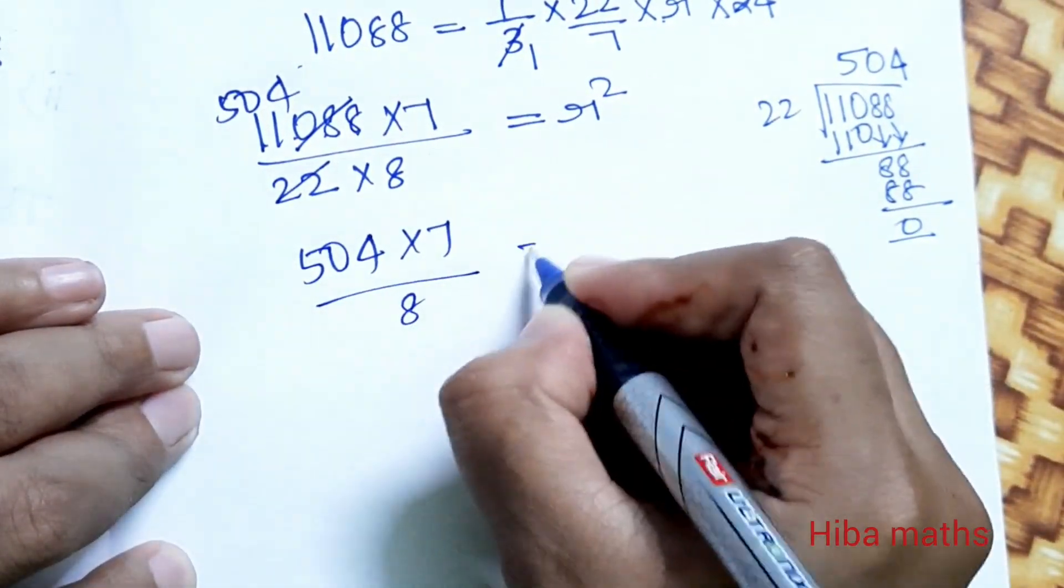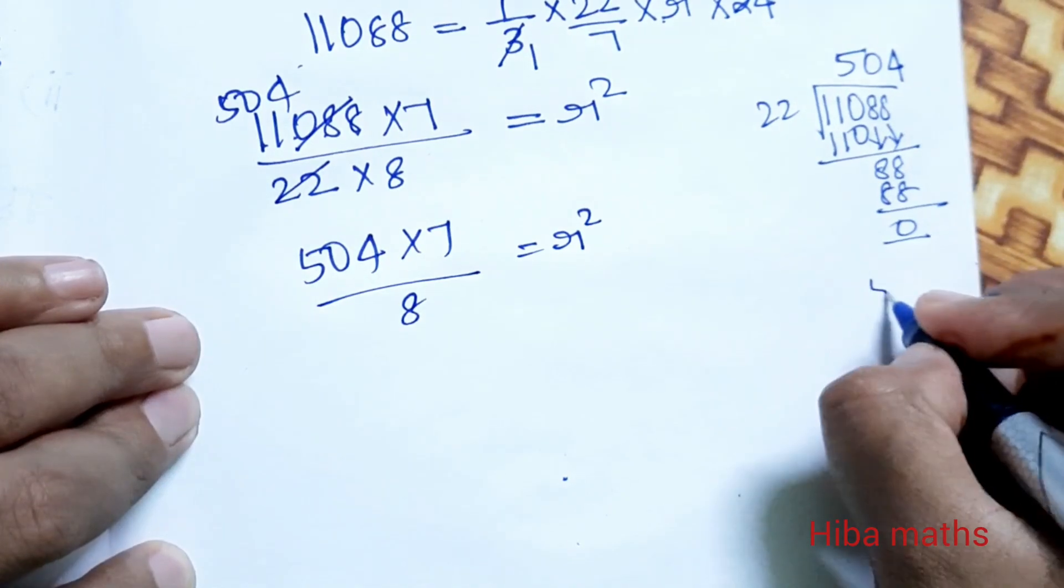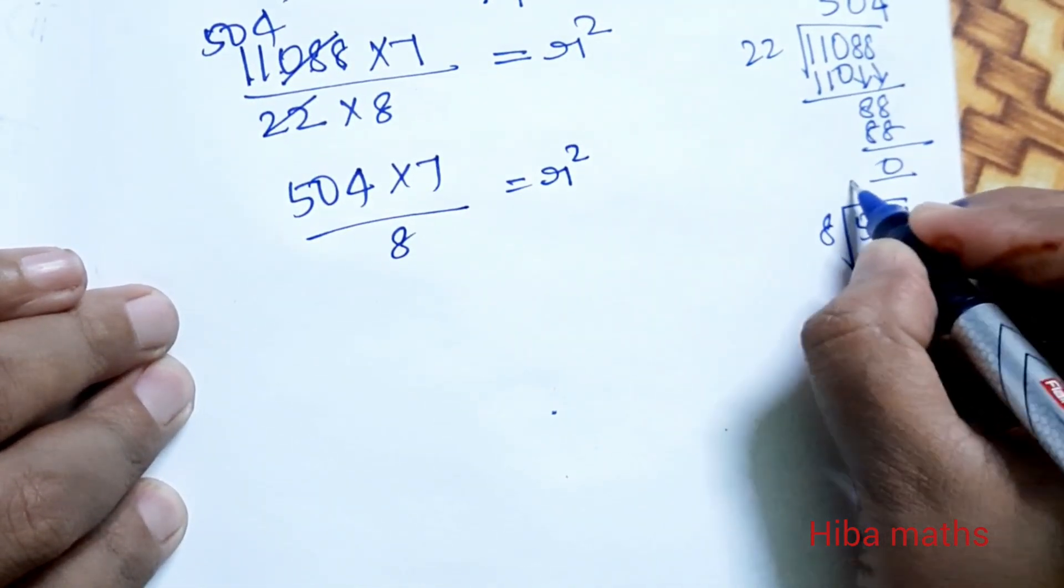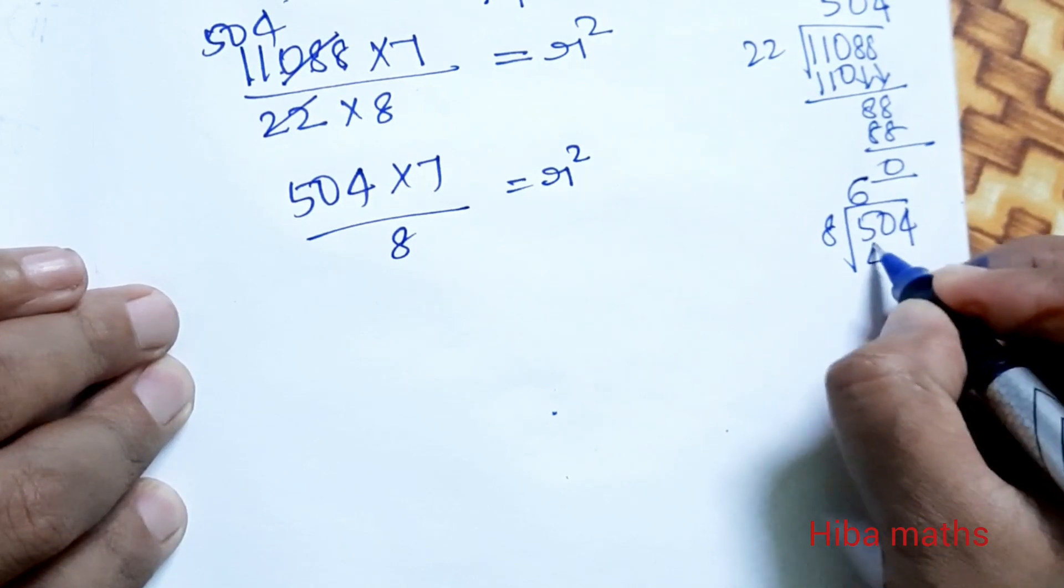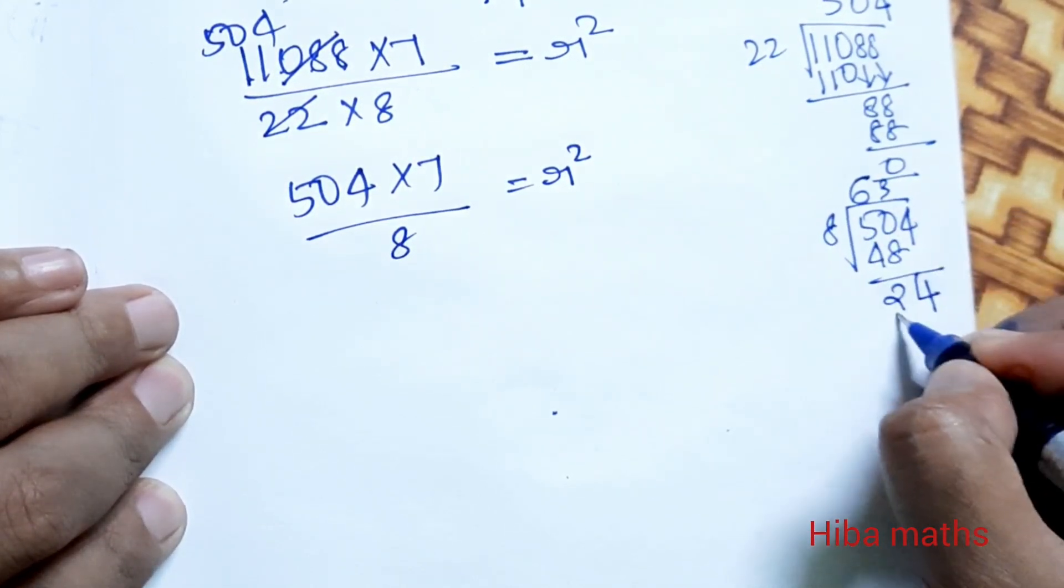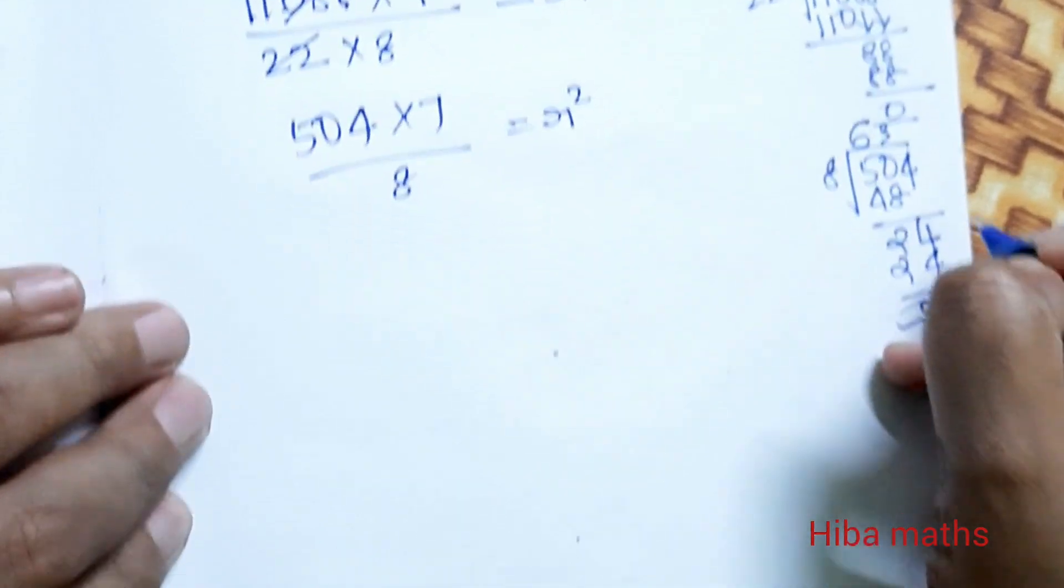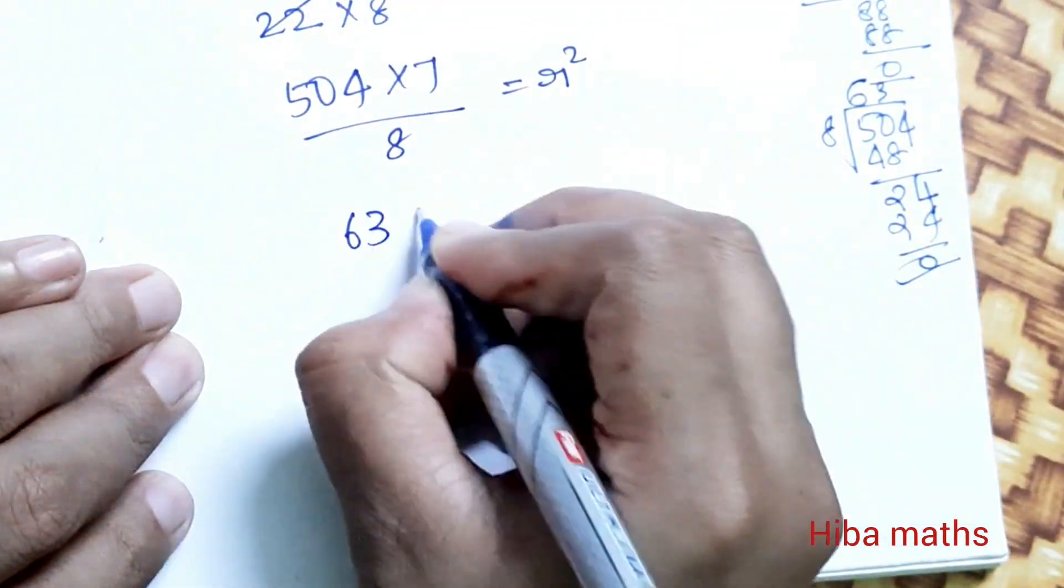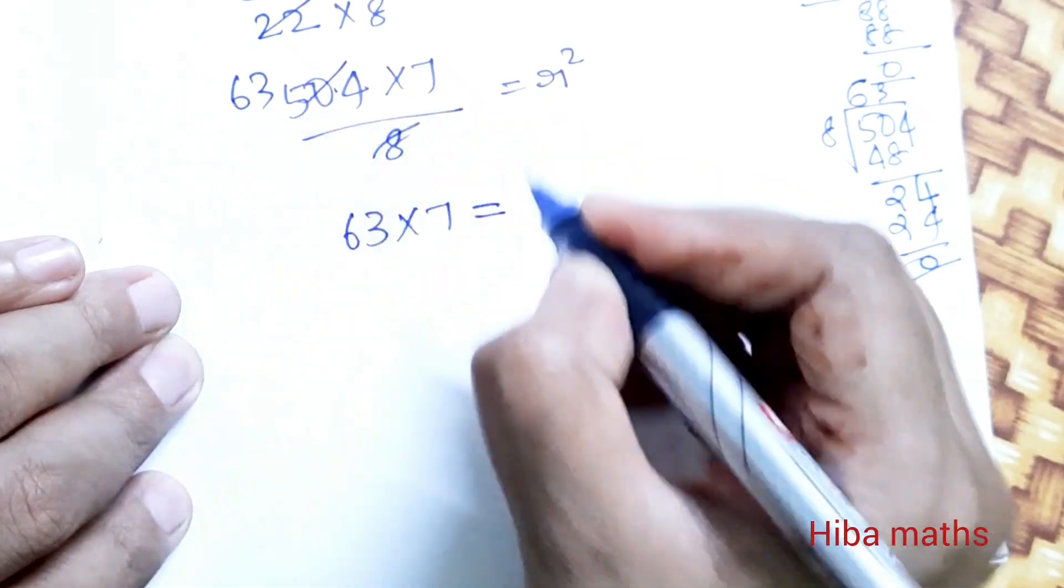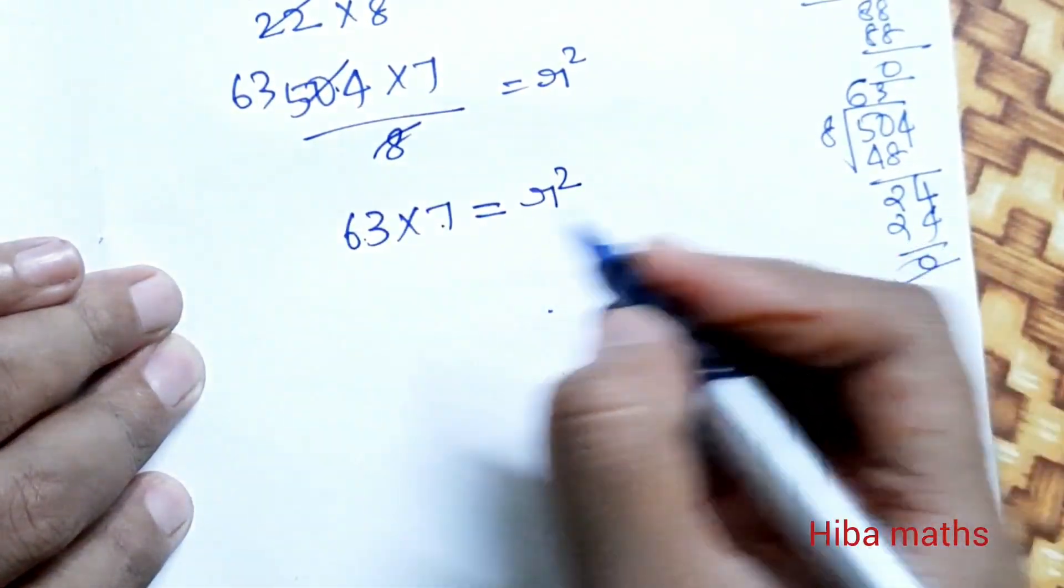After simplification, this equals r². Now after further calculation, 63 into 7 is equal to r².